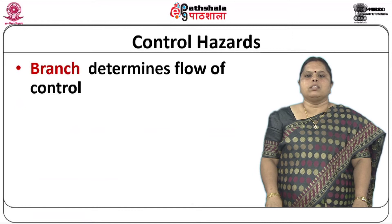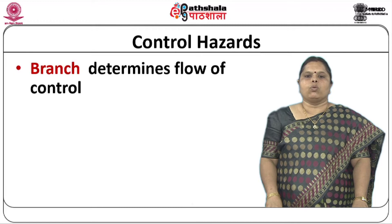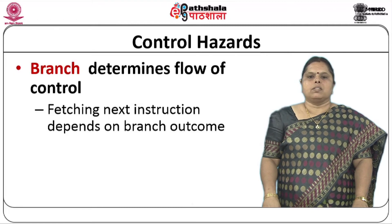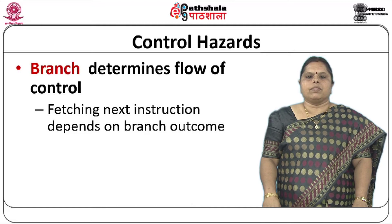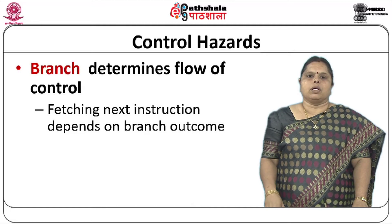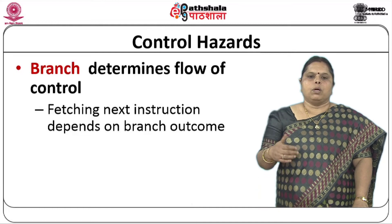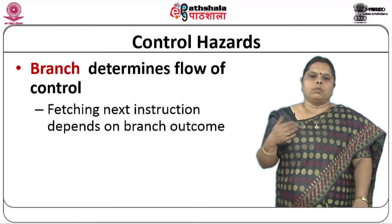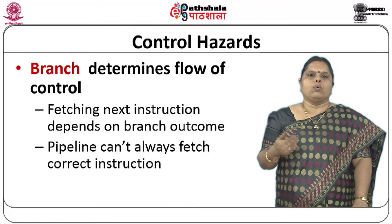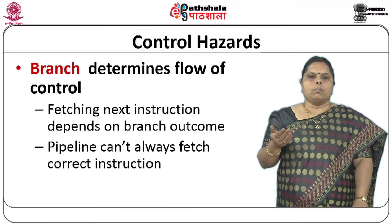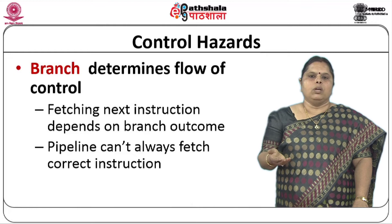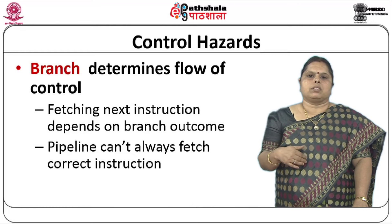Control hazards are caused by branches. Branches determine the flow of control for a program. When you fetch the next instruction, if that instruction is going to be dependent on a branch outcome, we are not going to have a sequential flow. Normally there is a sequential flow of instructions, but when you come across a branch, depending upon the outcome, the next instruction will have to be fetched from elsewhere.